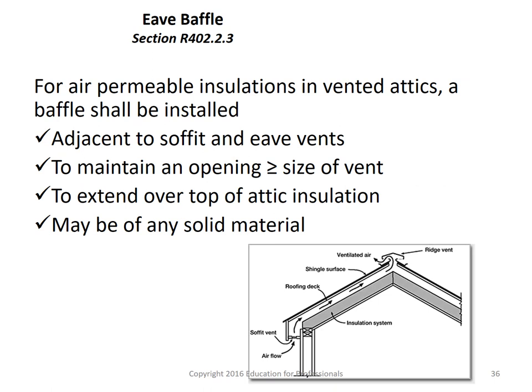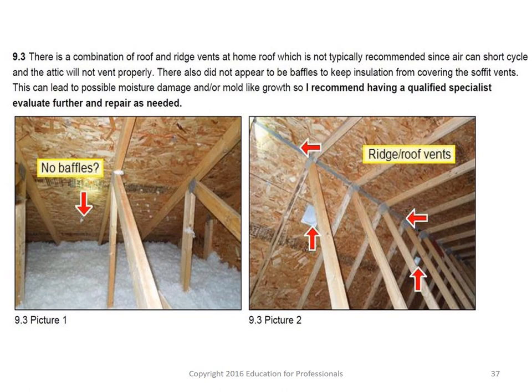For air-permeable insulation in vented attics, eave baffles must be installed adjacent to soffit and eave vents to maintain the vent opening and to extend over the top of the attic insulation — preventing insulation from falling into the soffits. They may be made of any solid material, though plastic baffles are commonly available at home improvement stores.